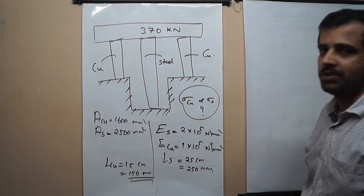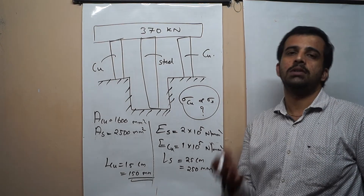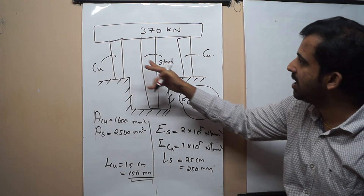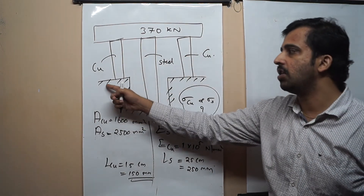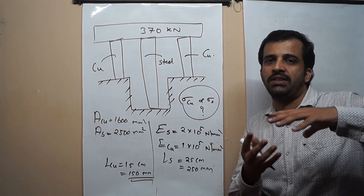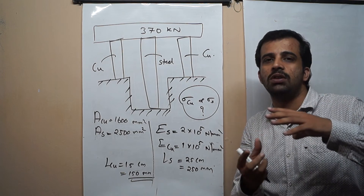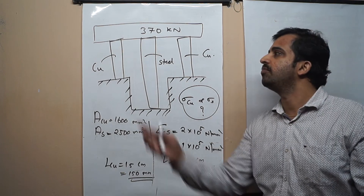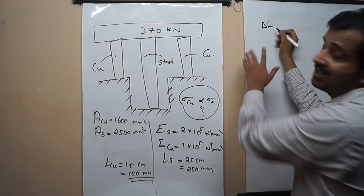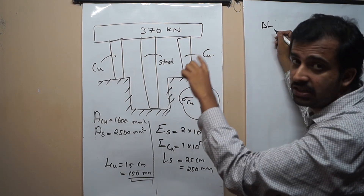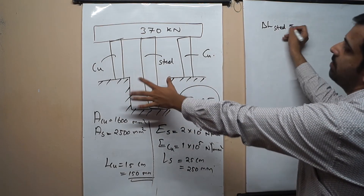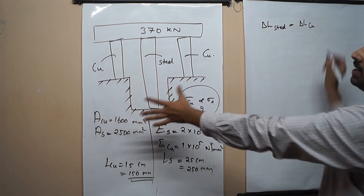Now this is a composite structure. The 370 kN load is trying to compress the copper bars and the steel bar equally because the lower end is fixed. So we can say that whatever change in dimension occurs due to compression will be the same for copper and steel. Therefore delta L for the steel should be equal to delta L for the copper. This is our compatibility condition.